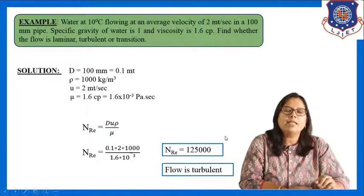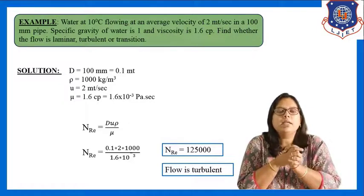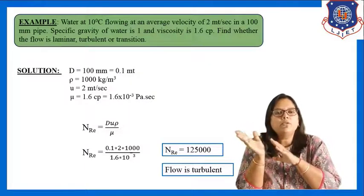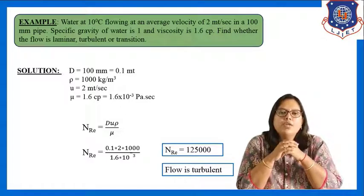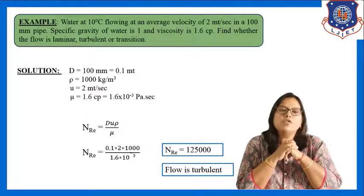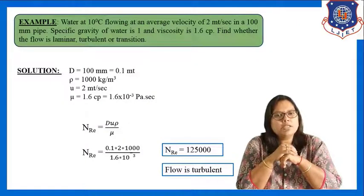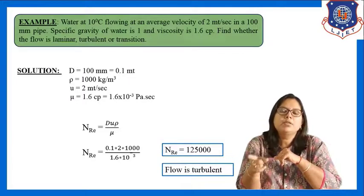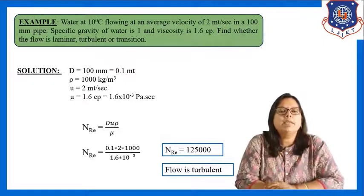As seen in our previous session: when NRE is less than 2100, the flow is laminar; when NRE is greater than 4000, the flow is turbulent; and when NRE is between 2100 and 4000, it is the transition region. In this example the value of NRE is 125,000, which is greater than 4000, so the type of flow is turbulent. So this is the Reynolds number example.